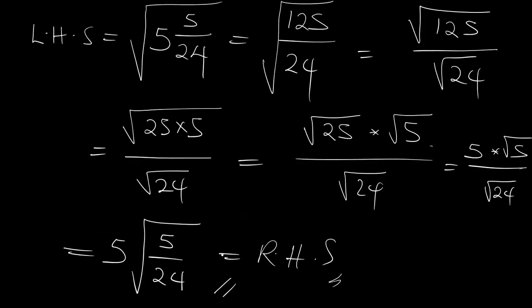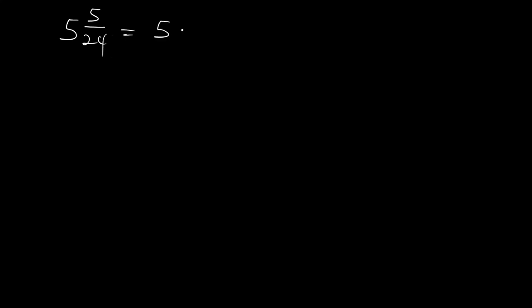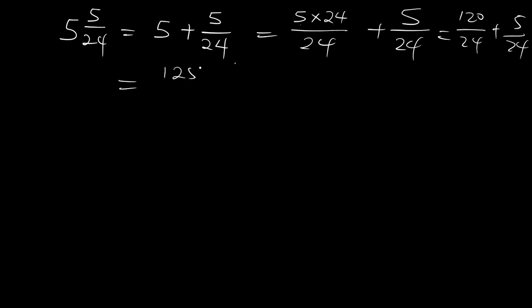There was something that might confuse some people. If you have a mixed fraction — 5 whole number 5 all over 24 — it is the same thing as saying 5 plus 5 all over 24. To make the denominators the same: 5 times 24 divided by 24, plus 5 all over 24, gives 120 over 24 plus 5 over 24, which still gives 125 all over 24.